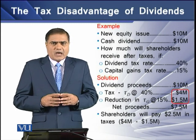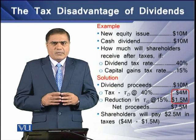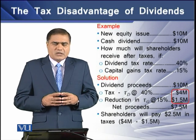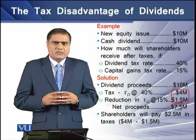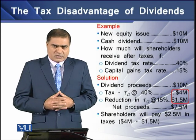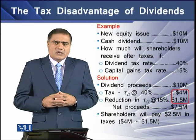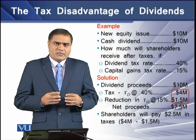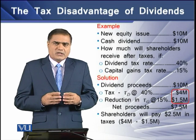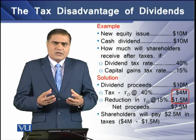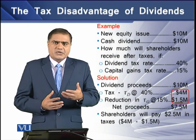After making a tax payment of $2.5 million, shareholders will receive a net proceed of $7.5 million. So there is a decline of $2.5 million in the income of the shareholders.